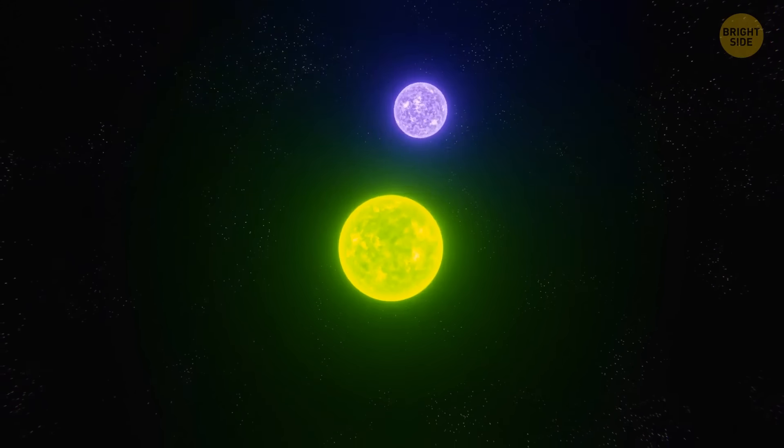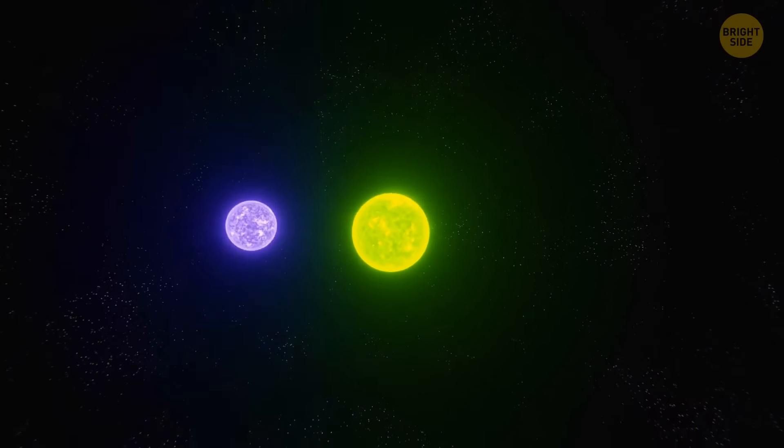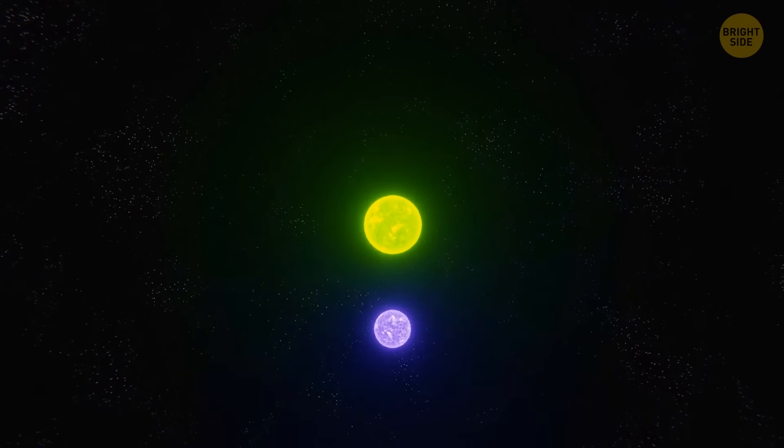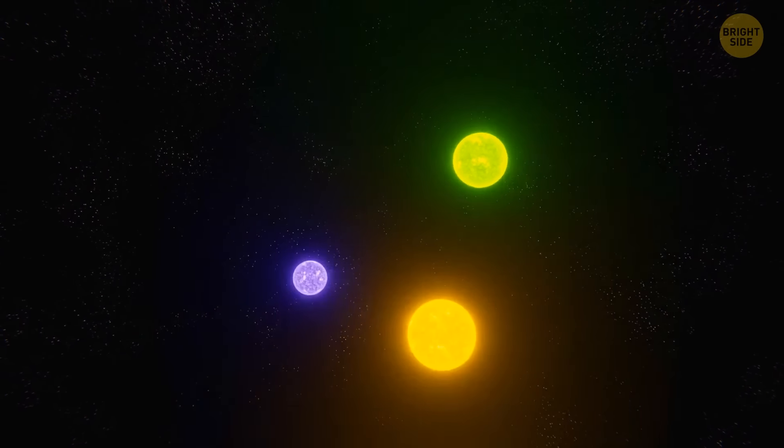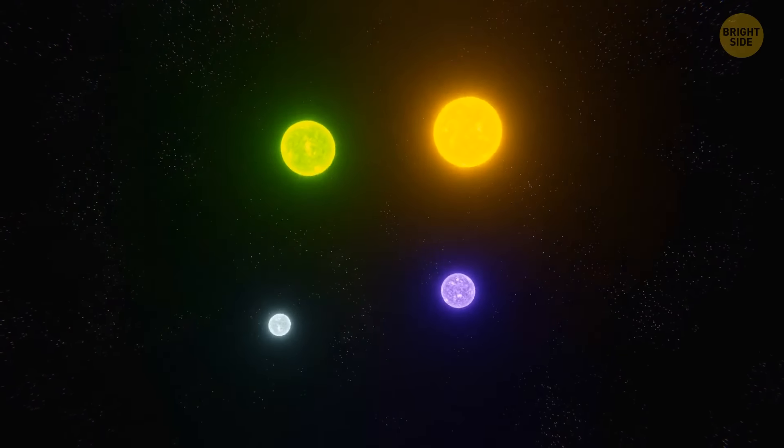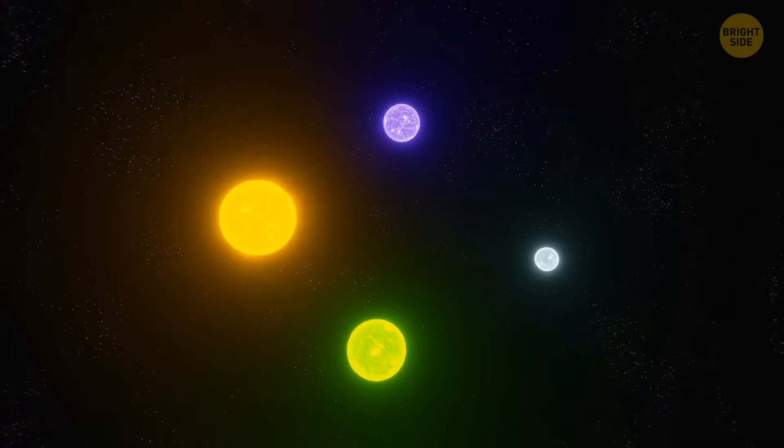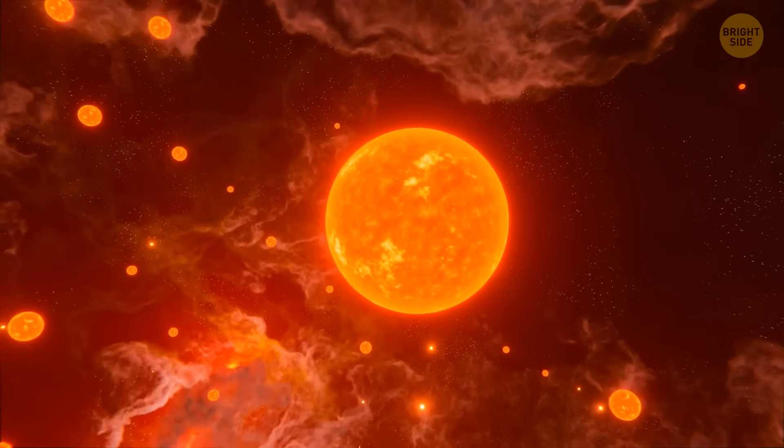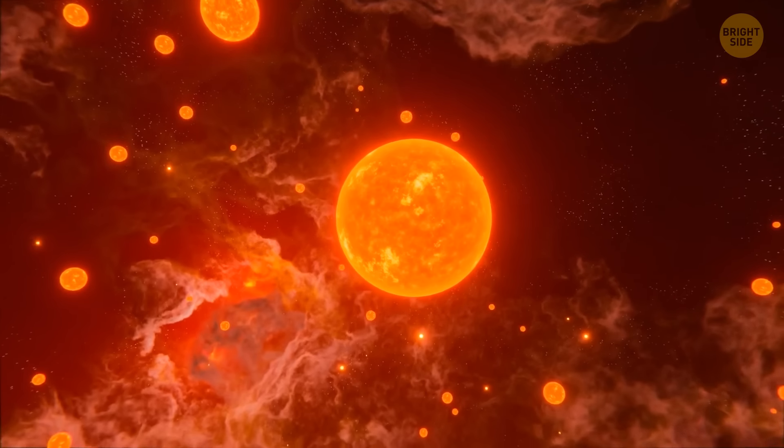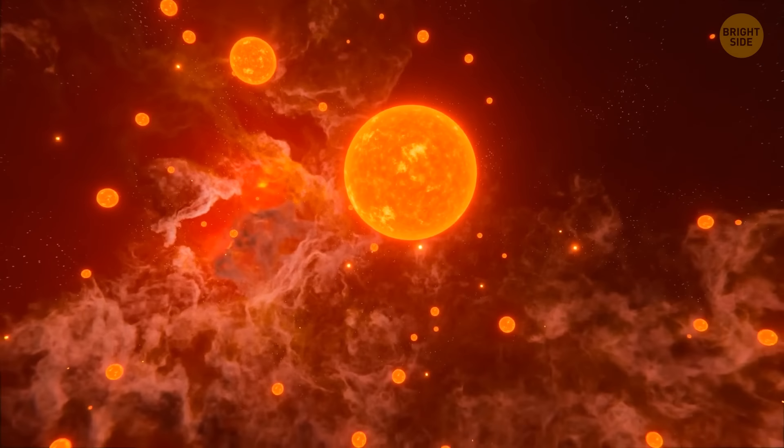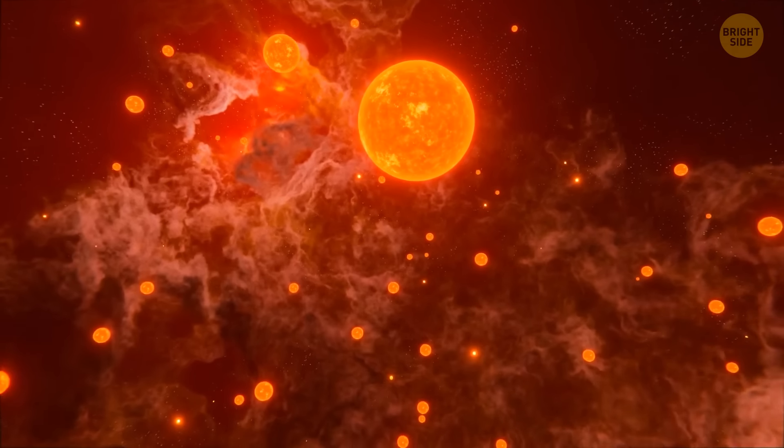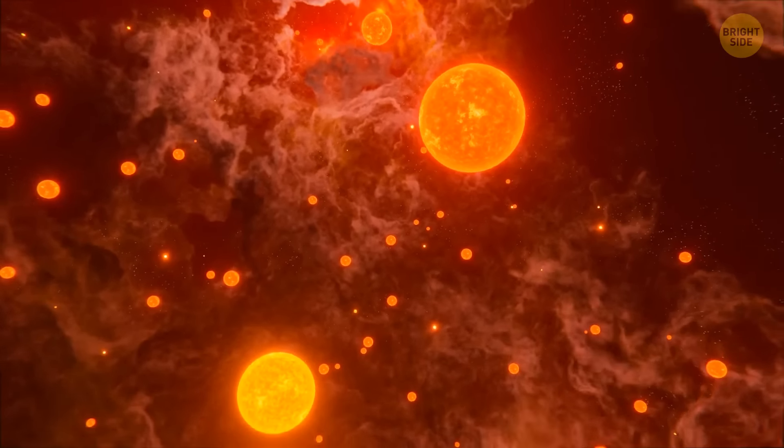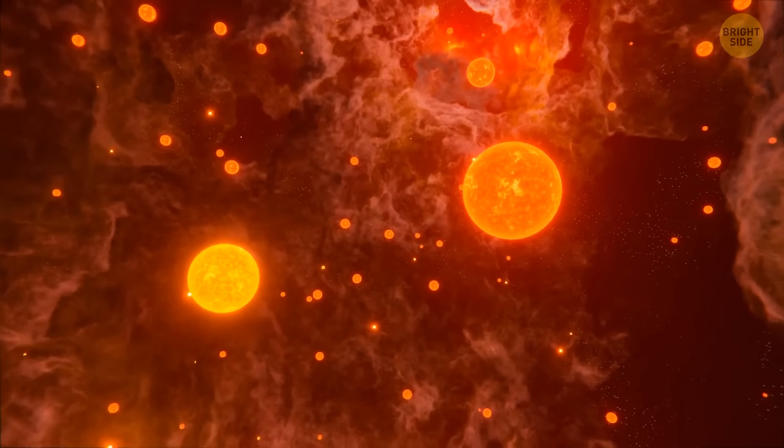Sometimes these companions stay together. For example, a small star will revolve around a large one. They can even form double, triple, and other star systems. And sometimes, their paths may diverge forever. This probably happened to our Sun, as well. It could have had a sibling, too. Perhaps not even one, but a whole cluster of little brothers and sisters. And one bigger twin with a similar mass and other characteristics.